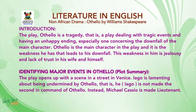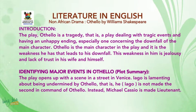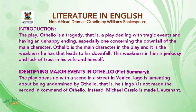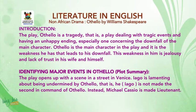The play opens up with a scene in a street in Venice. Iago is lamenting about being undermined by Othello — that is, Iago is not made the second in command of Othello. Instead, Michael Cassio is made lieutenant.